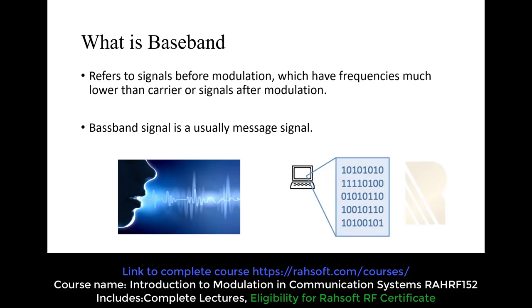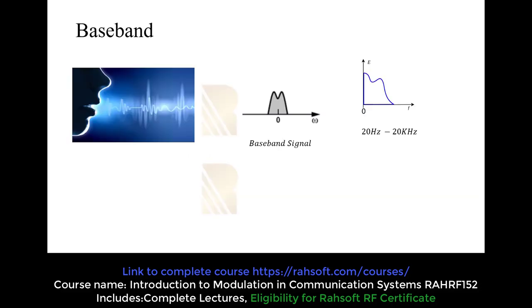So let's see what happens if we don't have the modulation. Imagine that there is a person and this person is talking. So we have his or her voice. And if we check the spectrum, it's going to be like this, as you see in the figure. And we are going to see only the half side of it, the single side. And let's say it's starting from 20 hertz and ending into 20 kilohertz. So this is called the baseband signal and its spectrum.